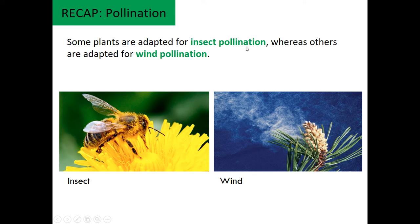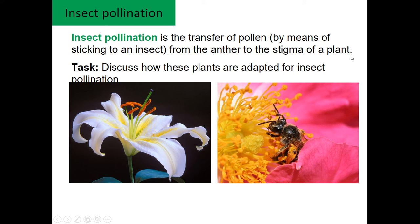You can have insect pollination, whereby an insect is attracted to the flower by the colours, the smell, and it's after the nectar. While doing that it gets covered in pollen, so when it goes on to the next flower it will pollinate that flower. Alternatively you have wind pollination, where the wind blows the pollen and hopefully it hits the stigma of another plant.